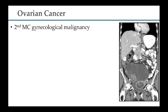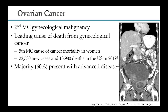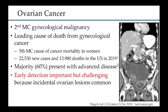Ovarian cancer is the second most common gynecological malignancy. It is the leading cause of death from gynecological cancer. It's the fifth most common cause of cancer mortality in women, with more than 22,000 new cases and almost 14,000 deaths in the US alone in 2019. Majority of these patients present with advanced disease, meaning they have relatively poor outcomes, and therefore it's important to detect these lesions early on.